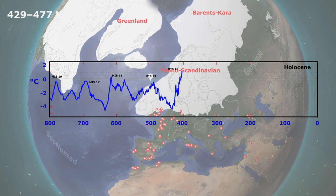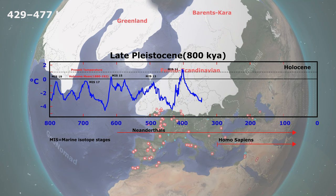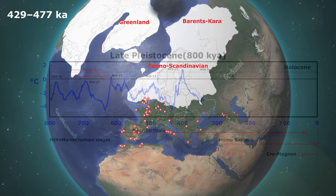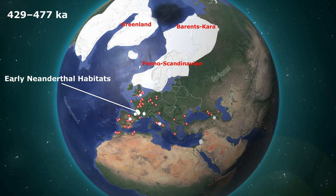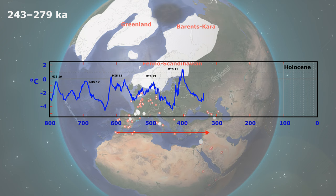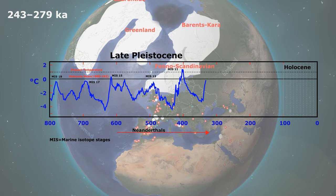365,000 years ago, the Earth cooled again — 3 degrees Celsius lower than the Holocene average temperature and 4 degrees Celsius lower than current temperatures. The lowest temperature was around 337,000 years ago, though it was 1 to 2 degrees Celsius higher than the previous glacial period. Hominin habitats in Europe may have expanded during this time. 330,000 years ago, the interglacial period started.